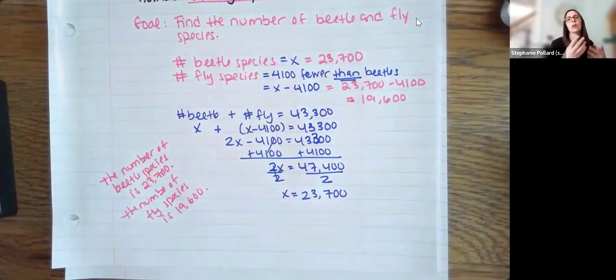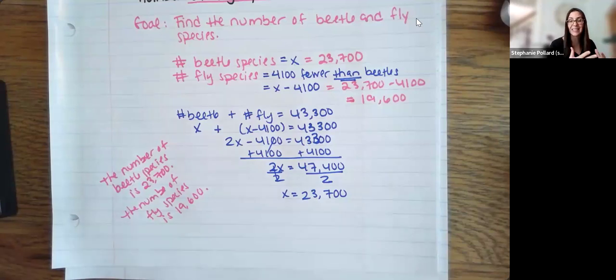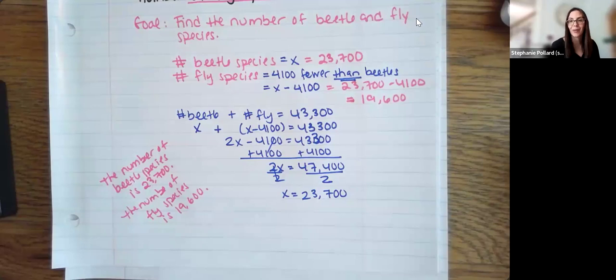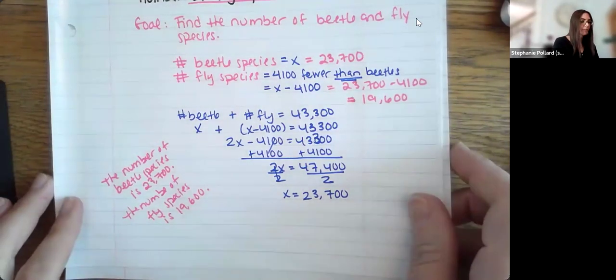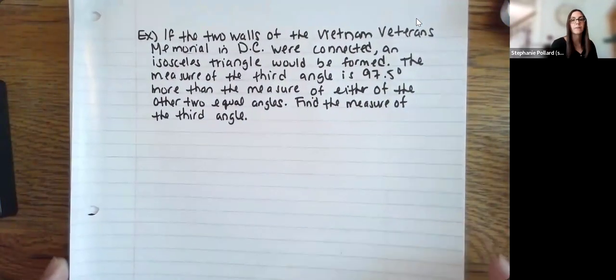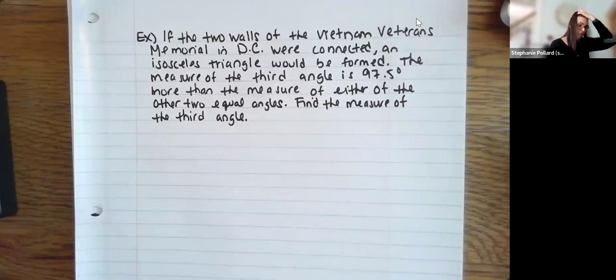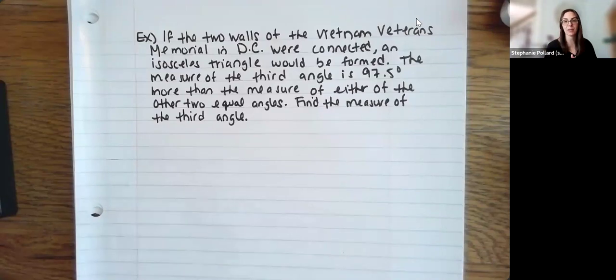I got nice whole number answers, which also makes sense — I'm talking about insects, so I shouldn't have fractions of an insect or negative insects. This looks good, and I feel pretty confident. My goal here is to show you a few different styles of problems, because there are so many different word problems. If I show you a couple of different styles, that will help you when you do other word problems as well — nothing's going to be exactly the same, so you'll have to apply what you've learned here to different problems.